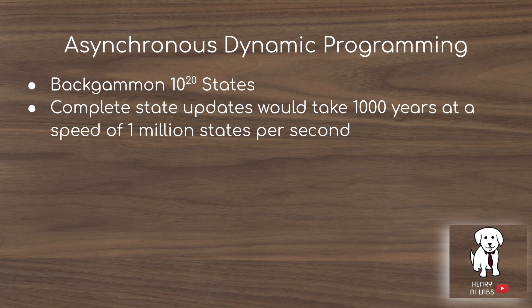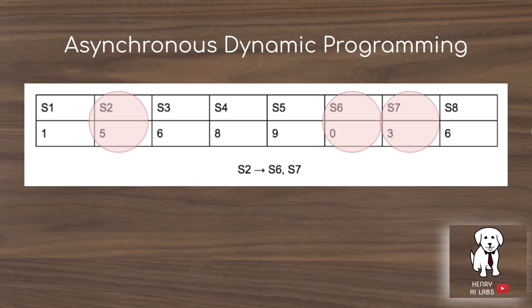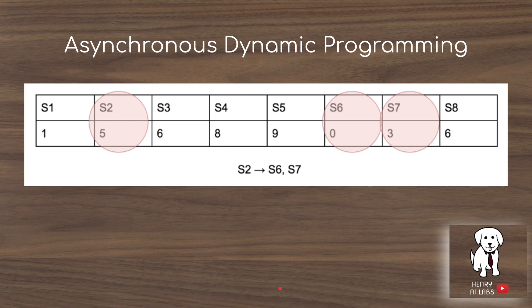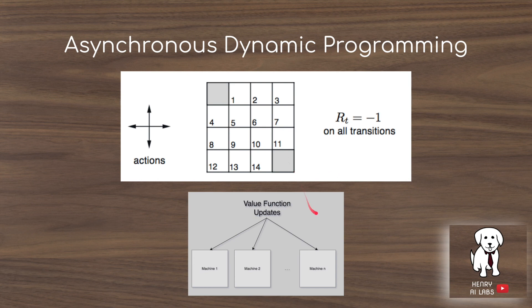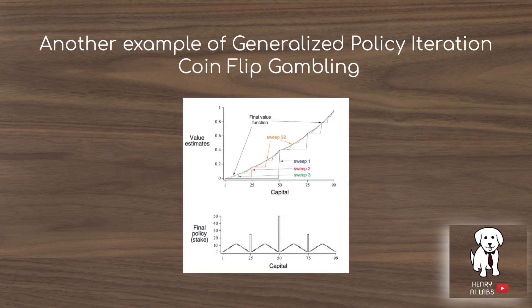Asynchronous dynamic programming makes DP applicable to large problems like chess and backgammon. In backgammon with 10 to the 20 states, a complete state space sweep updating all value function estimates would take 1,000 years at a speed of 1 million state updates per second. Asynchronous dynamic programming updates value estimates of a subset of states rather than the entire set at every policy evaluation iteration. It can also be distributed across machines — sending subsets of the state space to different machines — with the book providing convergence guarantees despite potentially noisy value function updates.